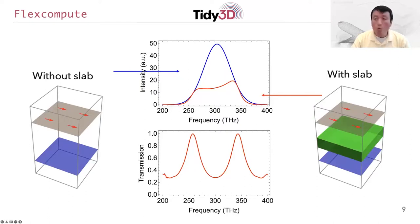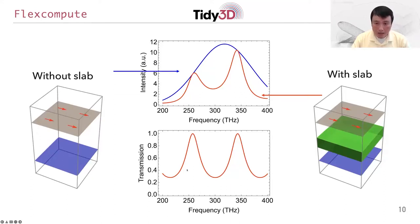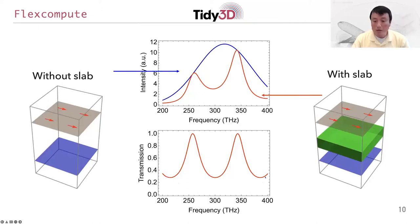To fix this, what you would usually do is choose a pulse that's narrow enough in time so that its spectrum can cover the entire frequency range you are interested in. In our case, if you narrow the temporal duration of the pulse, you can get a source spectrum as indicated by the blue curve here, which now covers a broader range of frequencies all the way from 200 terahertz to 400 terahertz. Repeating the calculation with the slab and taking the ratio of these two, you get a much nicer transmission spectrum, which is a lot smoother, especially at the wings of the incident spectrum from 200 to 400 terahertz.